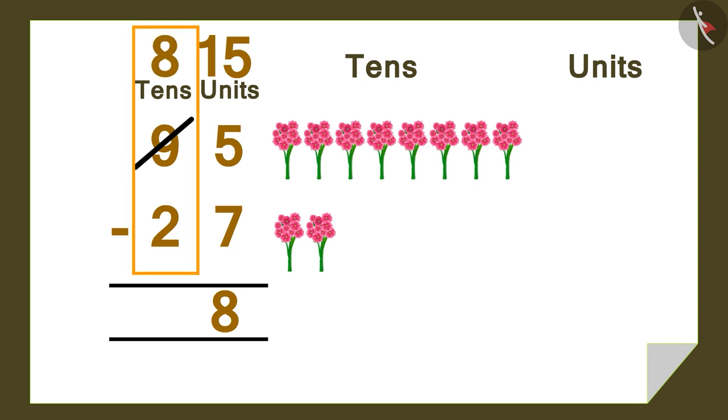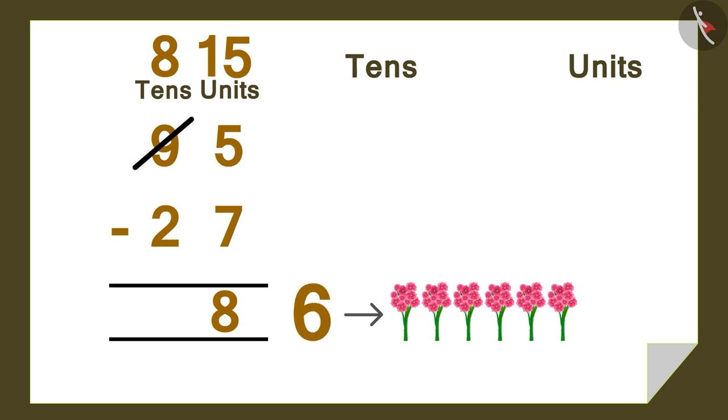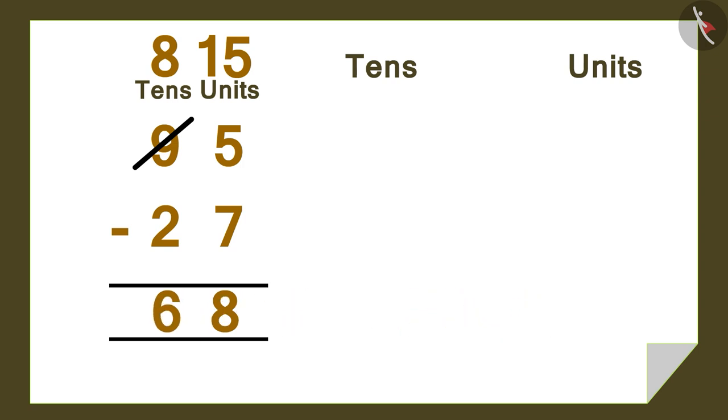Let us now subtract the numbers written in the tens column. 8 minus 2 becomes 6. Write this below the tens number.